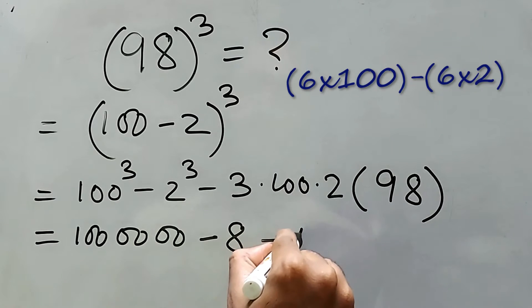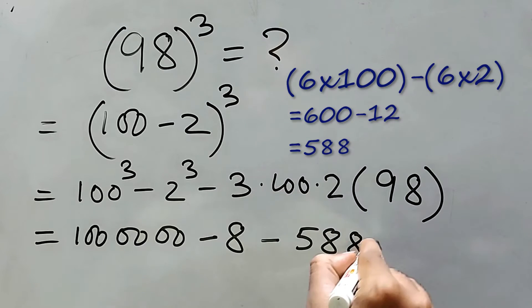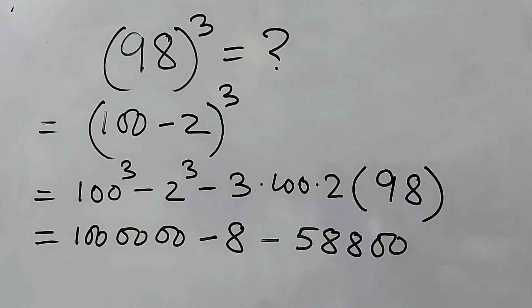Right, now 588 and double zero for this hundred, that's it. This 2 will be added, so the number will be 58808. Now this complete thing will be subtracted from this number.